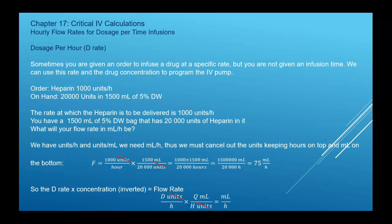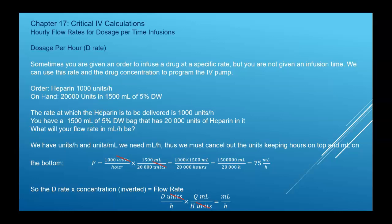We have hourly flow rates for dosage-per-time infusions. A dosage per hour — think of it as the D rate — is an amount of drug given over a specific period of time. For example, if heparin is ordered at 1,000 units per hour, to find the flow rate you multiply the D rate by the concentration, making sure you end up with milliliters on top and hours on the bottom.